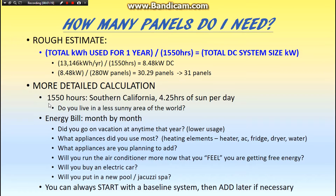This client lives in Southern California. The number 1550 hours comes from an average of 4.25 hours of peak sunlight per day in Southern California — one of the sunniest places in the US. If you live in a less sunny area, you might only have 3 or 3.5 hours of peak sunlight per day. Multiply that by 365 days and use that as your denominator instead.